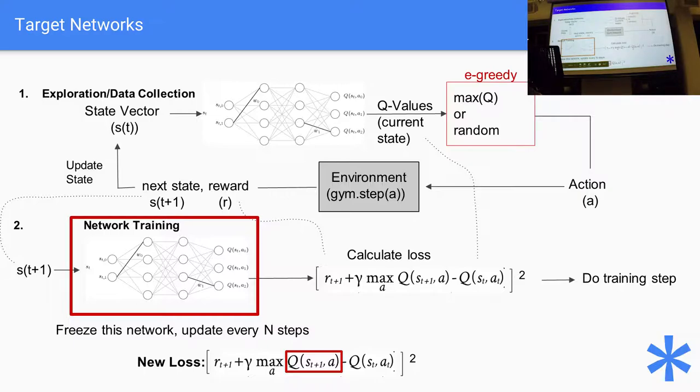So all of a sudden, these two queue terms here are no longer the same thing. The two queue networks used to calculate these are not the same. I keep this one here, you know, online updating, whenever I want updated. But I leave this for say 20 time steps. And what this does is it allows the Bellman estimate to just stay constant for a little while.